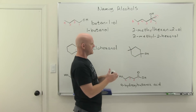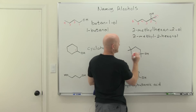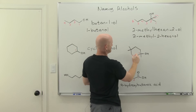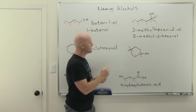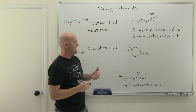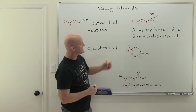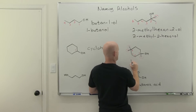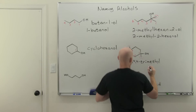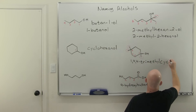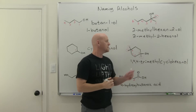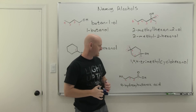Now let's add substituents to a cyclic alcohol. Position one is where the OH is attached. Whether you go clockwise or counterclockwise, the two methyl groups end up at carbon four either way. There's also a methyl group at position one. The parent chain is cyclohexanol, and we have three methyl substituents, giving us 1,4,4-trimethylcyclohexanol. Note that the '1' here refers to the substituent locant, not the OH — the OH position is still omitted from the parent chain name.